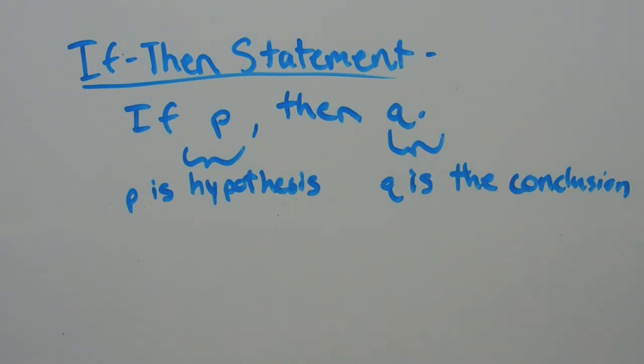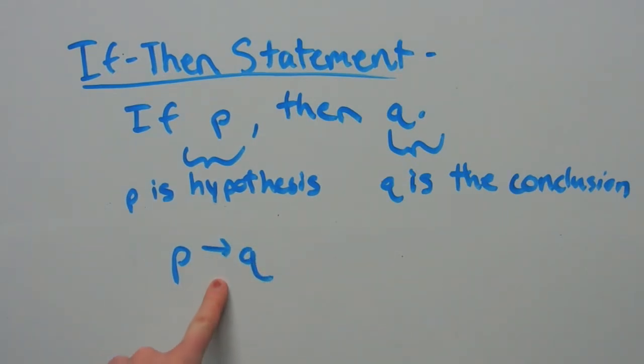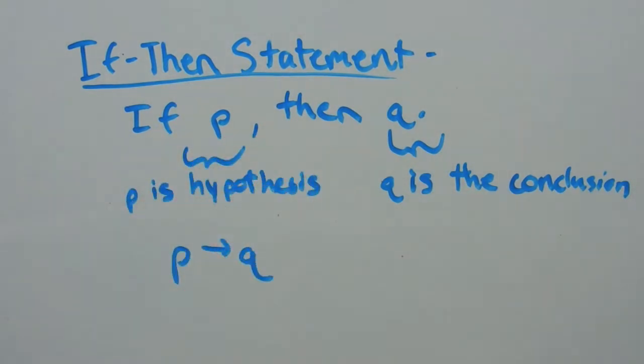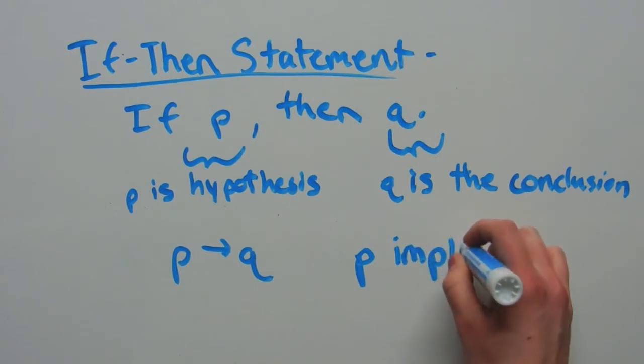In symbols, we would write P with an arrow pointing towards Q, meaning if P, then Q, or P implies Q.